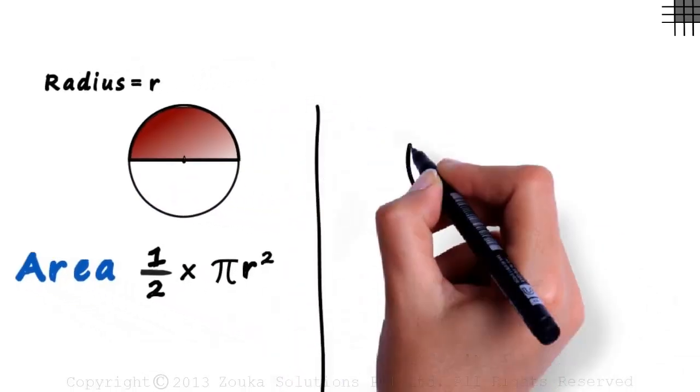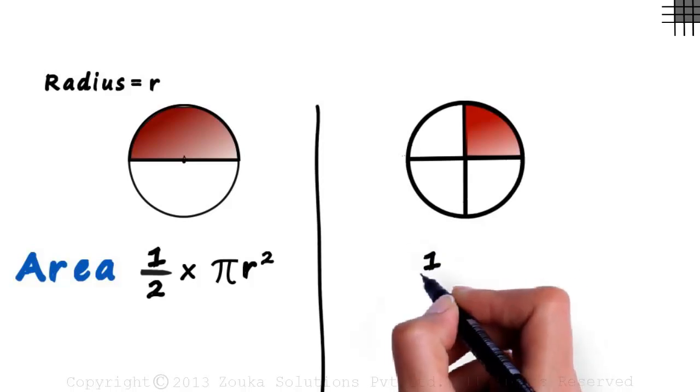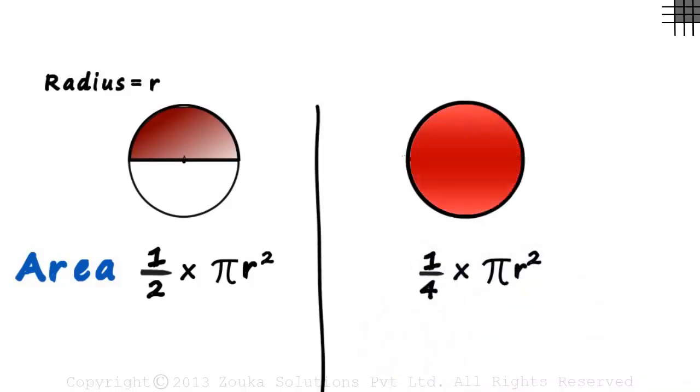Now look at this circle which is divided into four equal parts. What will be the area of this colored part? It will be one by four multiplied by pi r squared. Since the area of the circle is split into four equal parts, we multiply it by one by four.